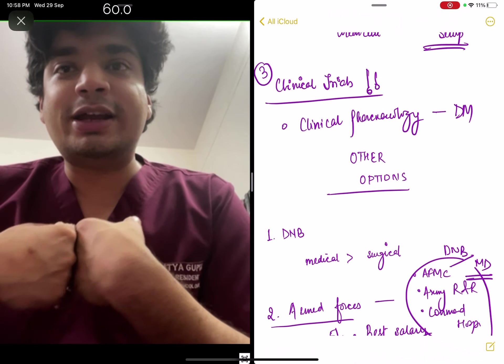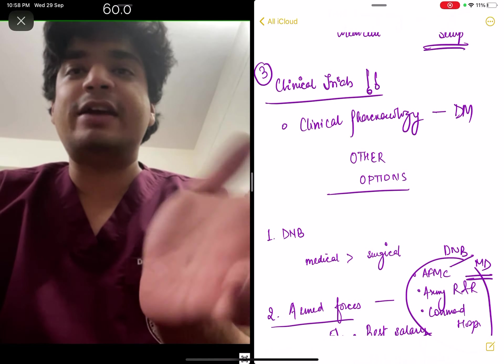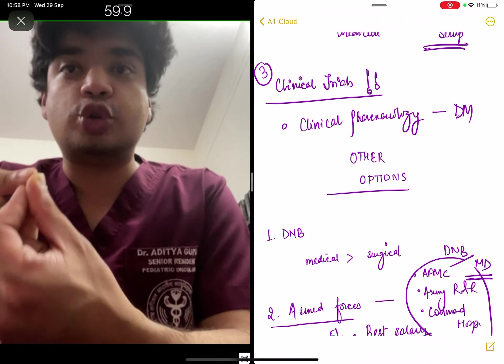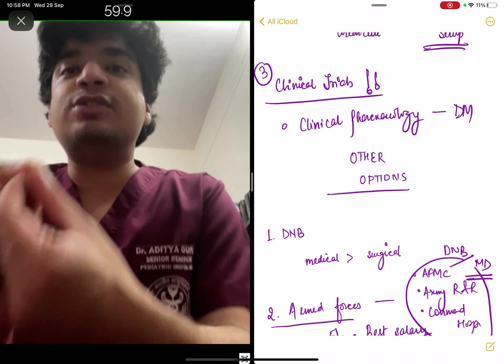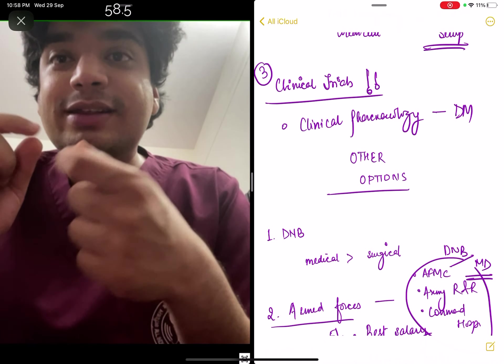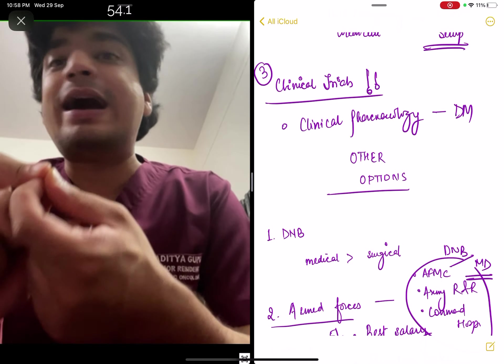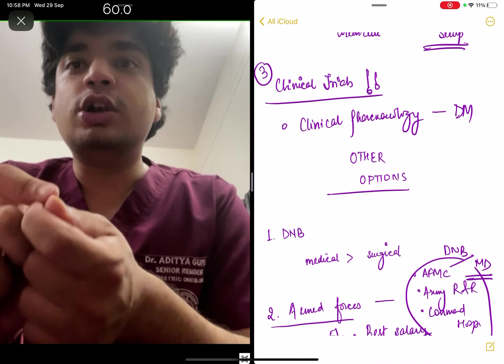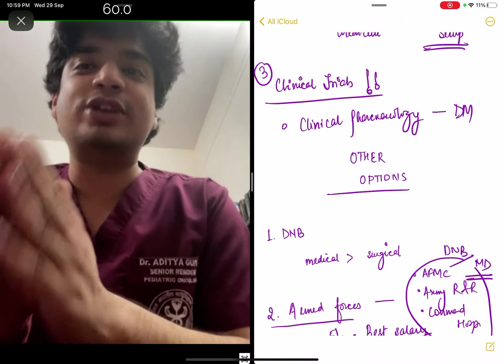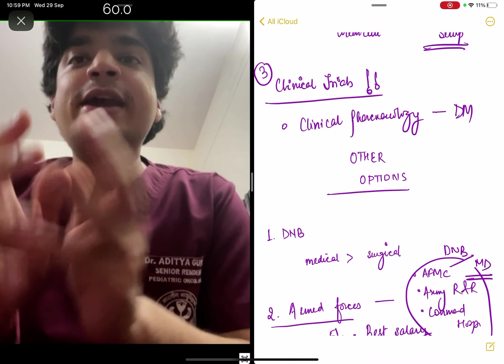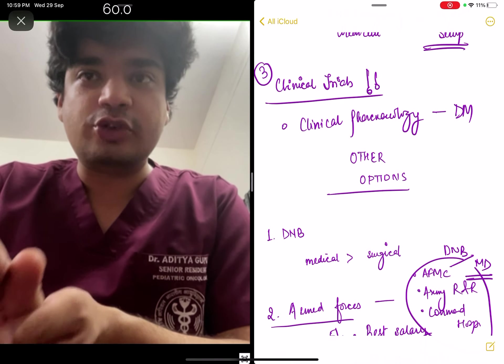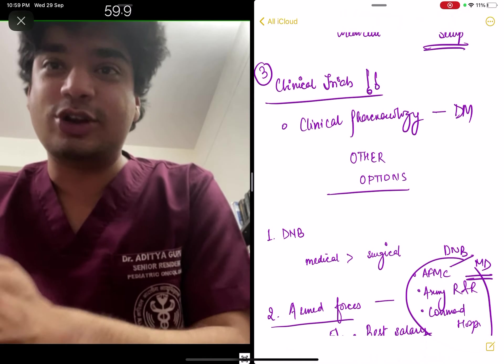When I got All India rank 17, I had a confusion. Getting a good rank, everyone says take radio. I had a confusion, should I take MD in radio diagnosis from AIIMS Jodhpur? My interest was actually in oncology even at that point of time, so in order to see how MD in radio diagnosis is at Jodhpur, I actually went to AIIMS Jodhpur to see how the setup is there and then took an informed decision that I want to do MD in pediatrics from my parent institute, AIIMS Delhi.